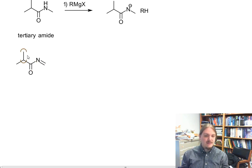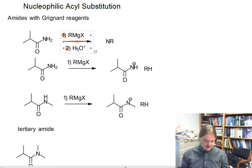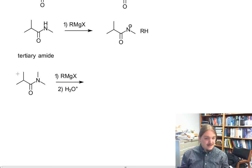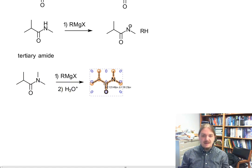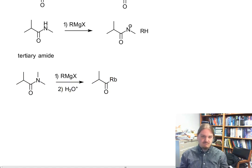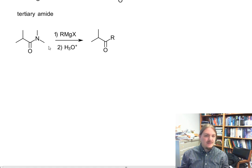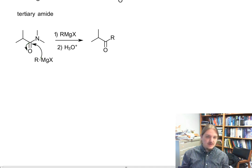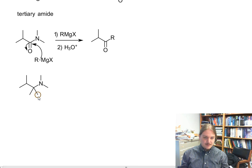After Grignard reaction and acidic aqueous workup, you can isolate from this reaction a ketone, depending on what your R group is. Now that there's no acidic hydrogen to react with, we get our nucleophilic attack that we expect the Grignard reagent to do, and we form our alkoxide intermediate.